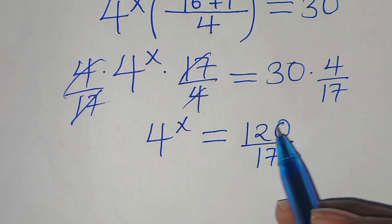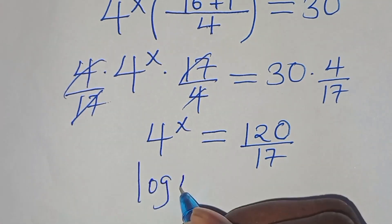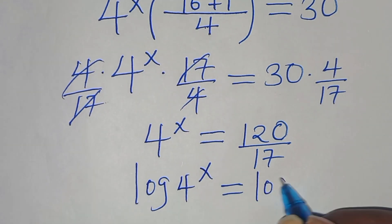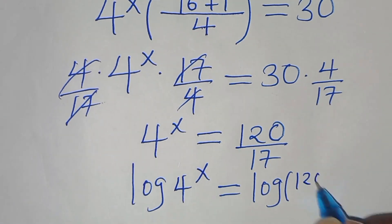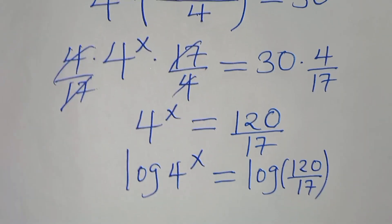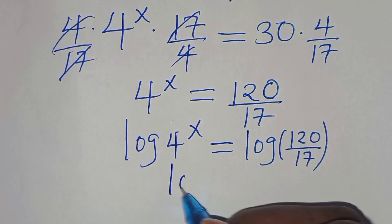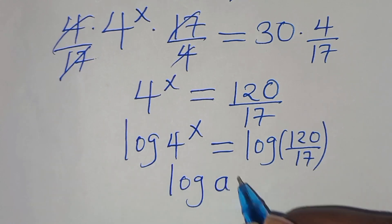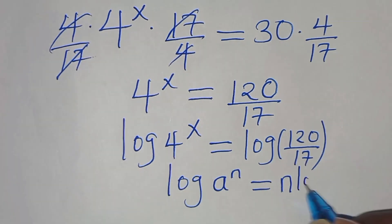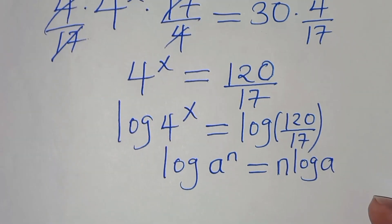To solve for x, we introduce logarithm on both sides. We have 4^x equals 120 over 17. Now 4^x is in the form a to the power of n, and applying the logarithm property — a to the power of n gives n times log a — so x times log 4 equals log(120 over 17).